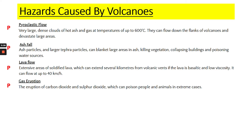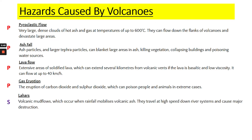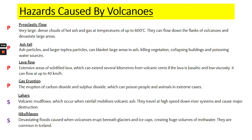Gas eruptions release gases such as carbon dioxide and sulfur dioxide into the atmosphere, which poisons people and potentially animals in extreme cases. Secondary impacts include lahars, which are volcanic mud flows that occur when rainfall mobilises volcanic ash, turning it into a sludgy mud that travels down rivers at high speeds. Finally, jökulhlaups are mainly seen in Iceland — another secondary impact whereby an ice cap on top of an erupting volcano melts, causing flooding down the hillside and river streams.